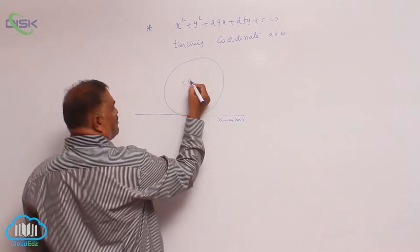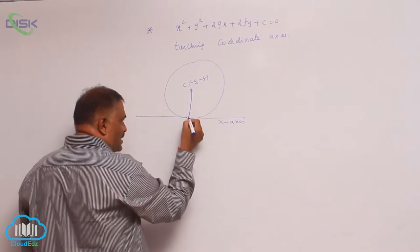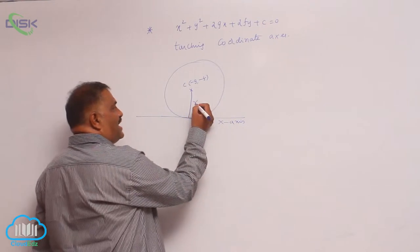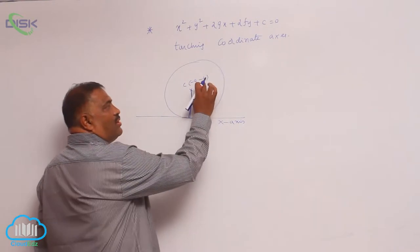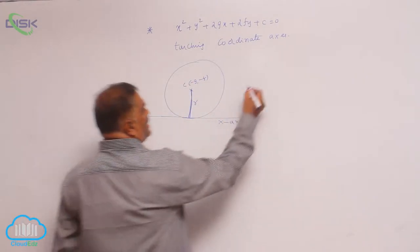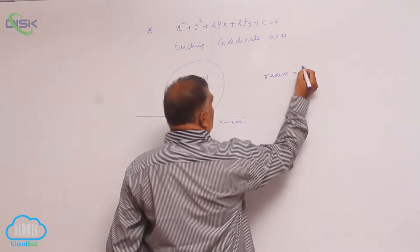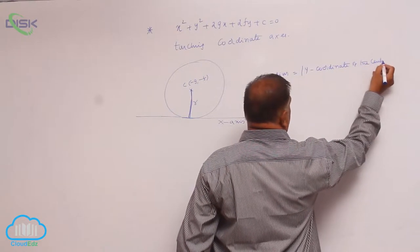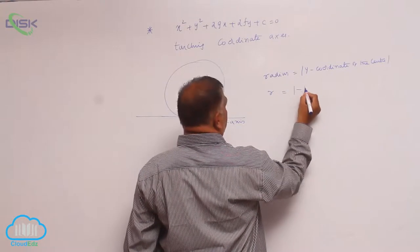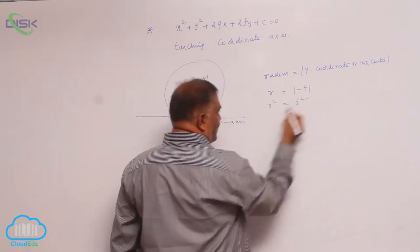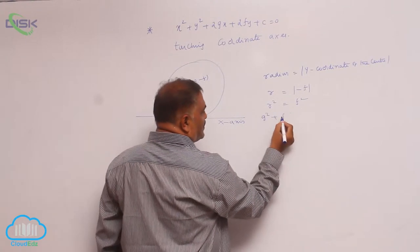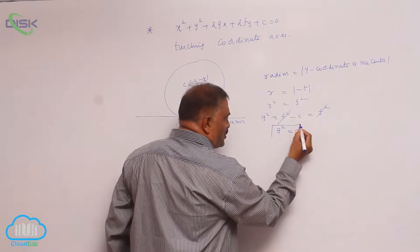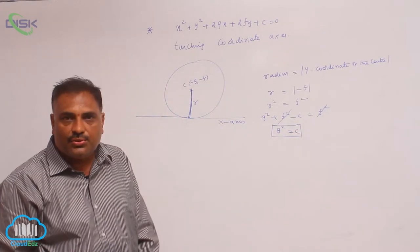The center is (−g, −f) and the radius is the vertical distance whenever the circle touches the x-axis. The vertical distance refers to the y-coordinate of the center, so r = |f|, meaning r² = f². Since r² = g² + f² − c, we get g² + f² − c = f², and cancelling f² gives g² = c. This is the condition for the circle to touch the x-axis.